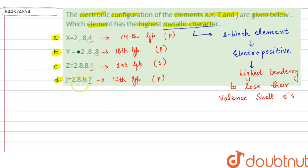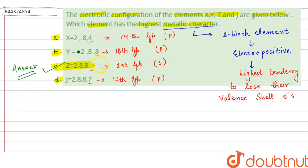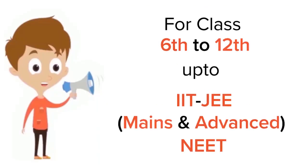From this analysis, the element with the highest metallic character is Z, because it belongs to the first group, which is an s-block element. Therefore, option C is the correct answer. Z has the highest metallic character because its tendency to lose electrons is the highest.